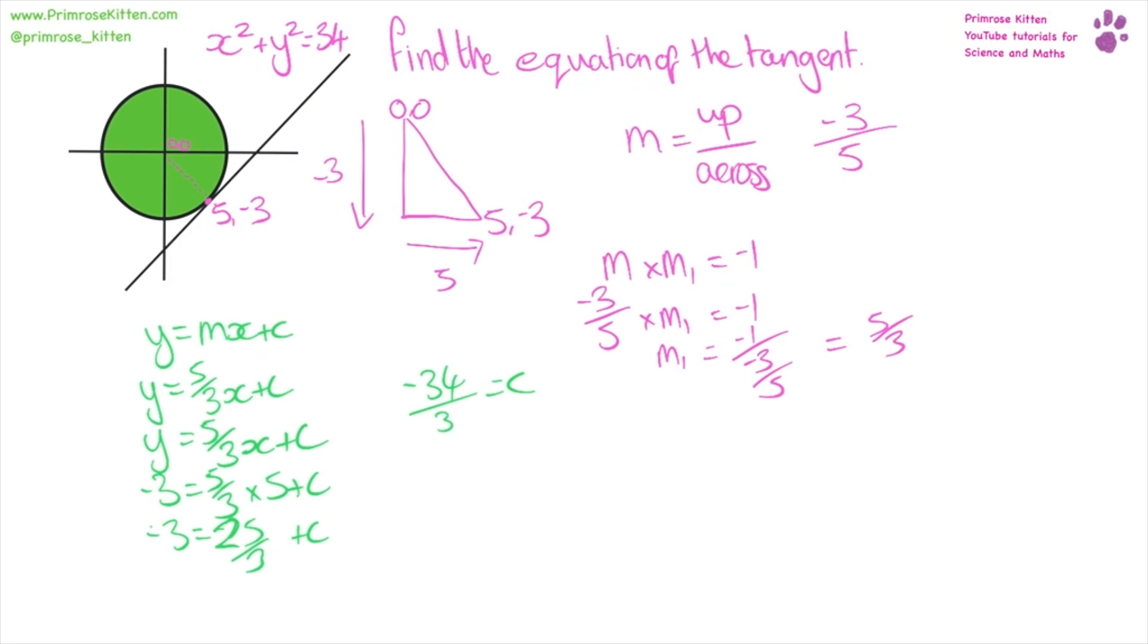So, we can say our equation for the straight line is y equals five over three x plus minus 34 over three. Now, I know this seems like a slightly strange way of writing it, but this is just the way that I've seen that the exam boards prefer to write it. They prefer for you to keep things as fractions.